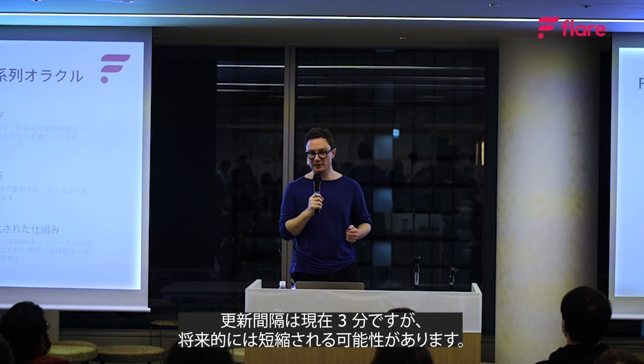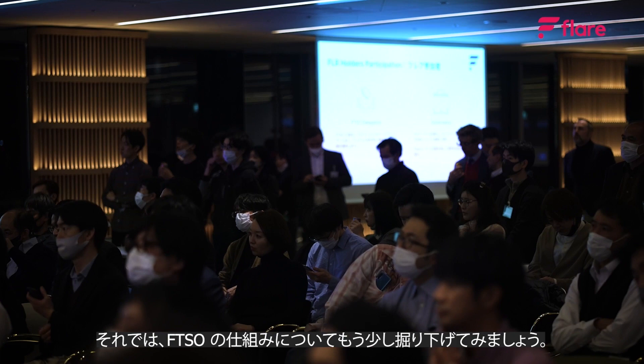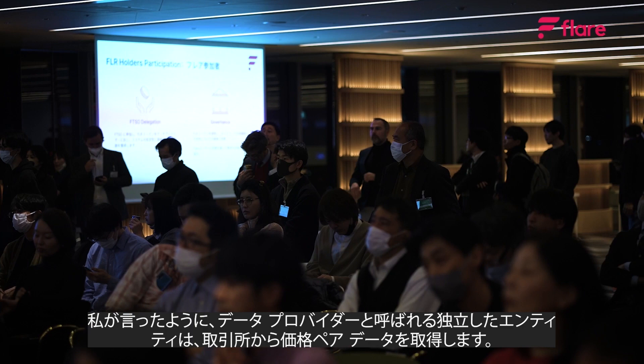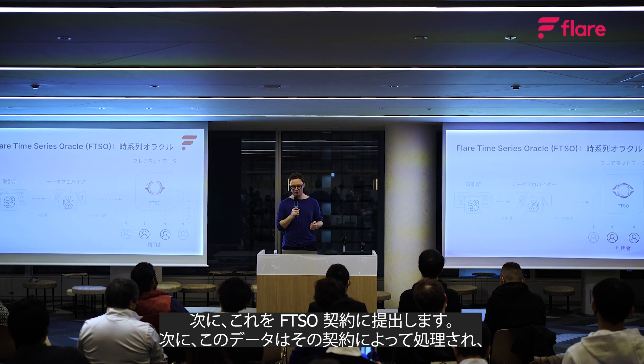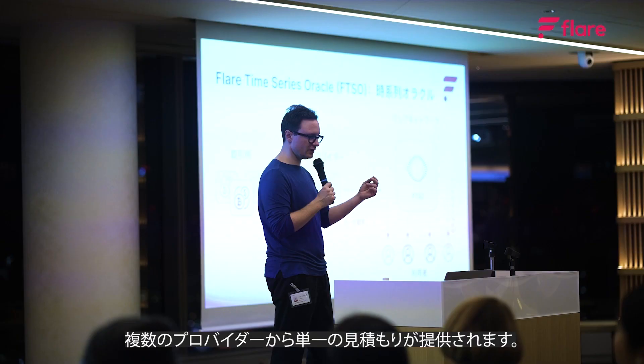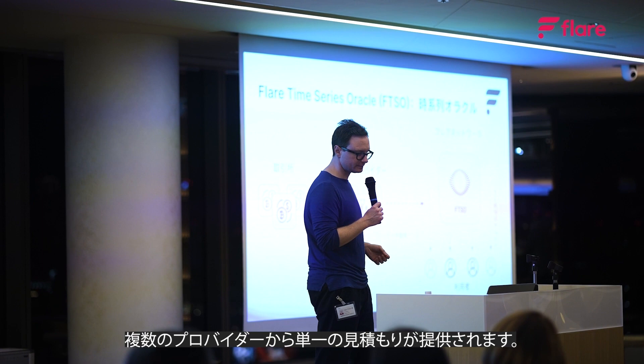Independent entities called data providers fetch price pair data from exchanges and submit this to the FTSO contract. This data is then processed by that contract to provide a single estimate from those multiple providers. The price estimate is computed and made available on-chain to any application.